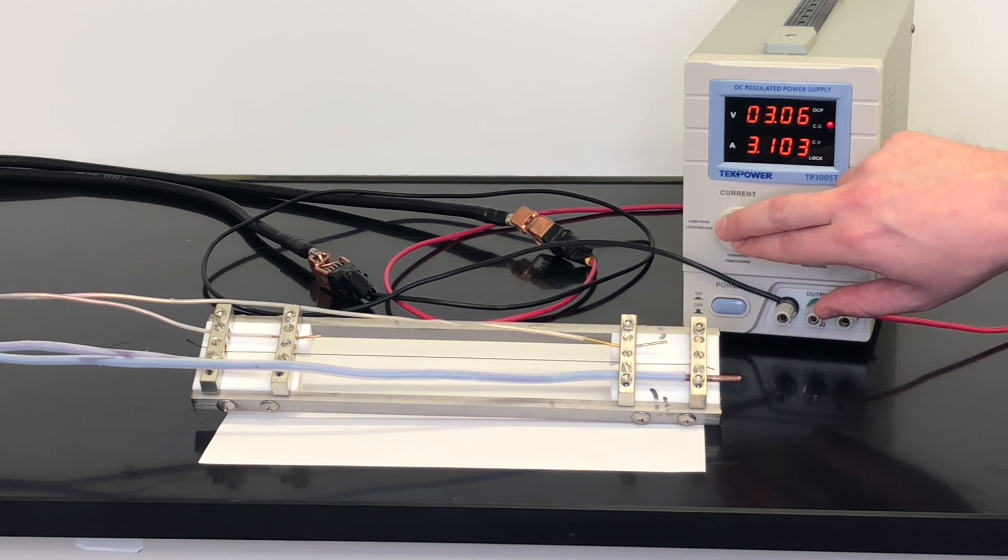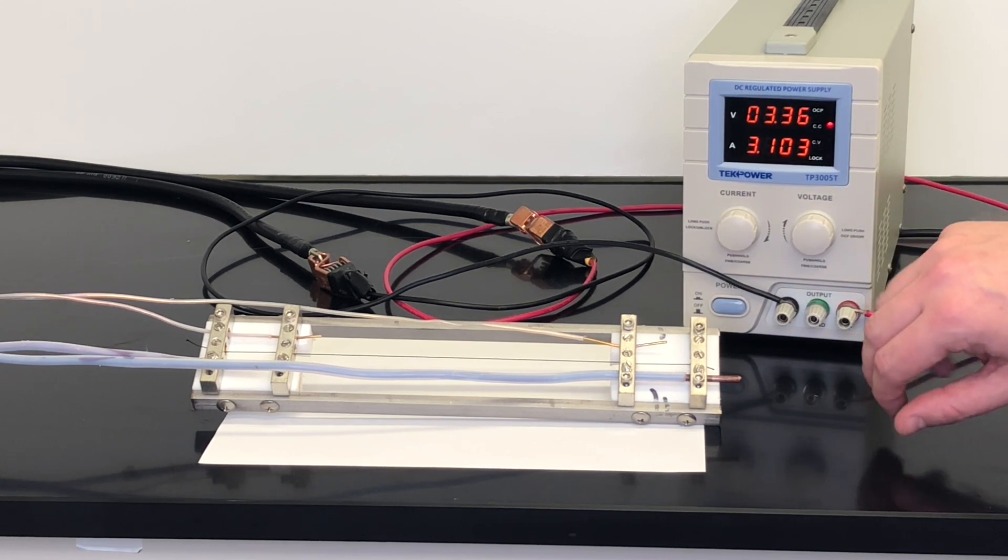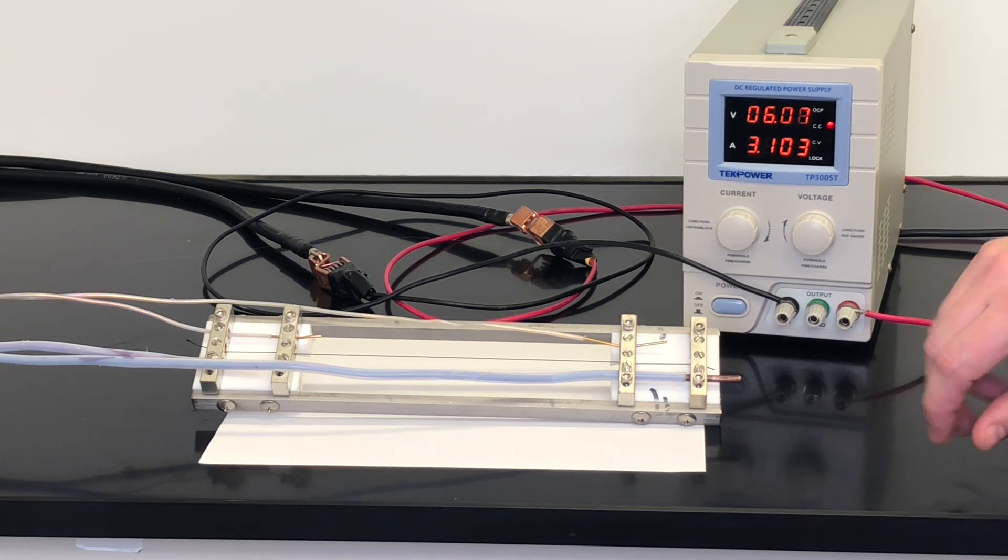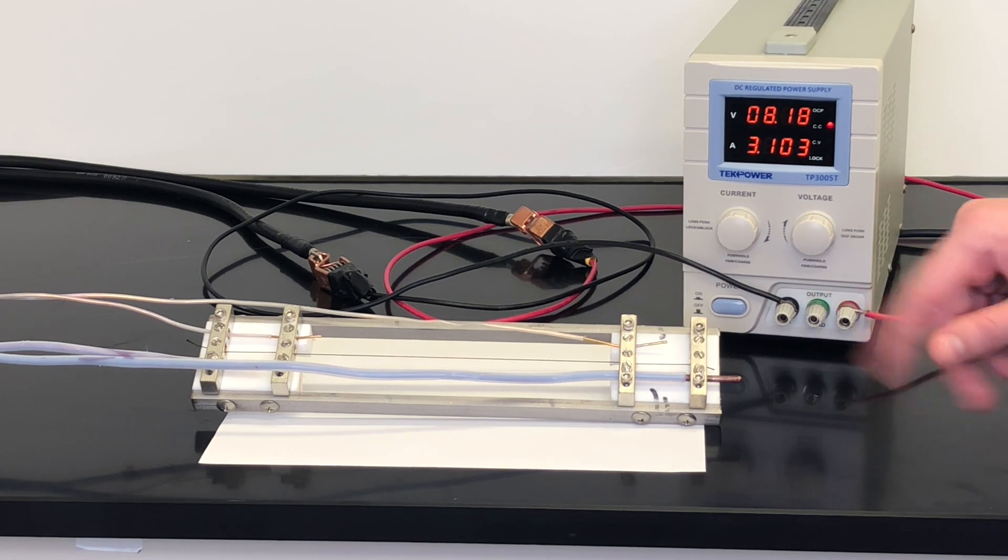That changes once we reach 3.1 amps. At this current you can see that the voltage is increasing on its own even though the current value is stable. This is because the yarn has reached a critical temperature at which it's begun to degrade and its resistance is increasing.